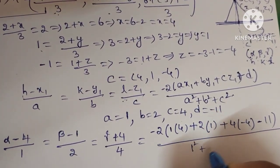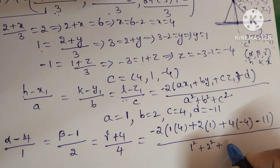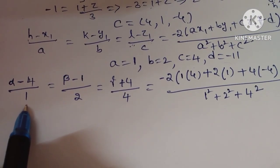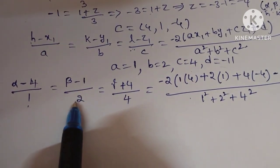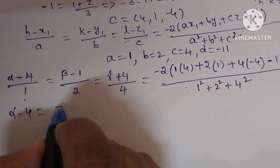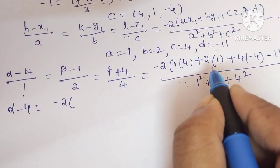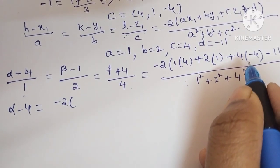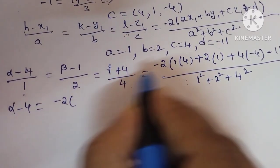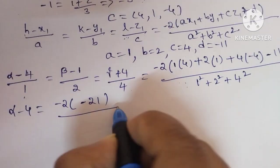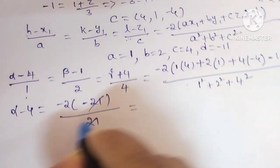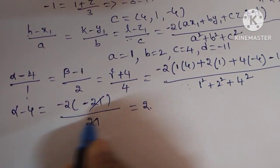Simplifying the right-hand side: numerator = -2(4 + 2 - 16 - 11) = -2(-21) = 42; denominator = 1 + 4 + 16 = 21. So the constant = 42/21 = 2. Each ratio equals 2.